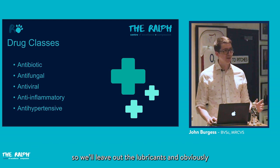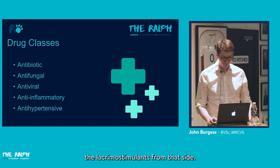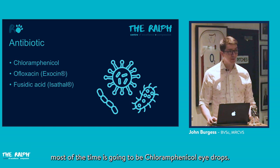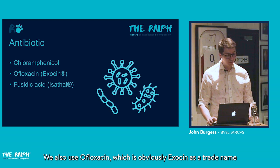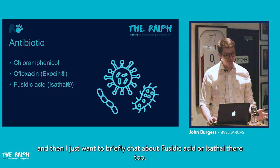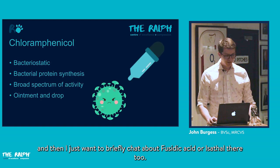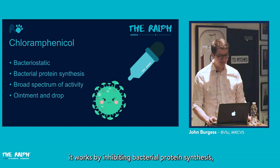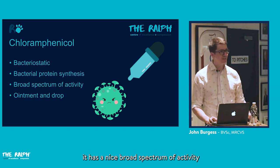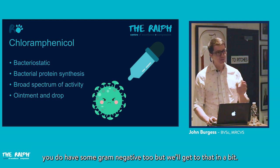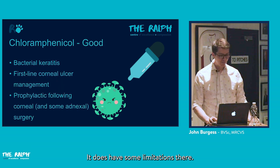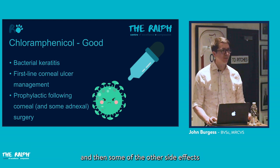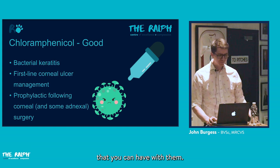From an antibiotic standpoint, the first-line choice most of the time will be chloramphenicol eye drops. We also use ofloxacin, trade name Exocin. Chloramphenicol is a bacteriostatic antibiotic that works by inhibiting bacterial protein synthesis. It has a broad spectrum with good gram-positive activity and some gram-negative coverage, though with limitations.